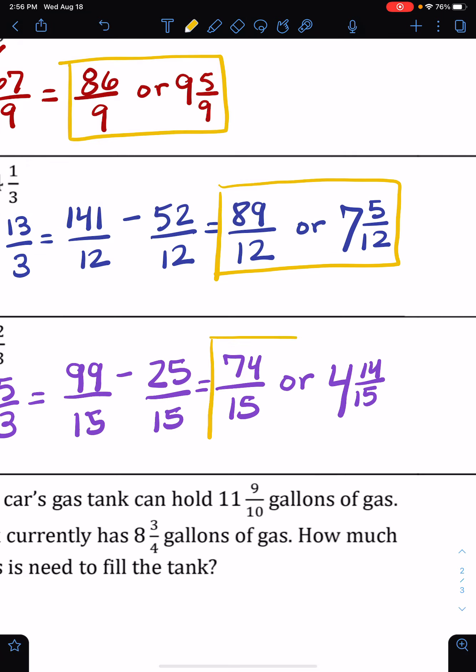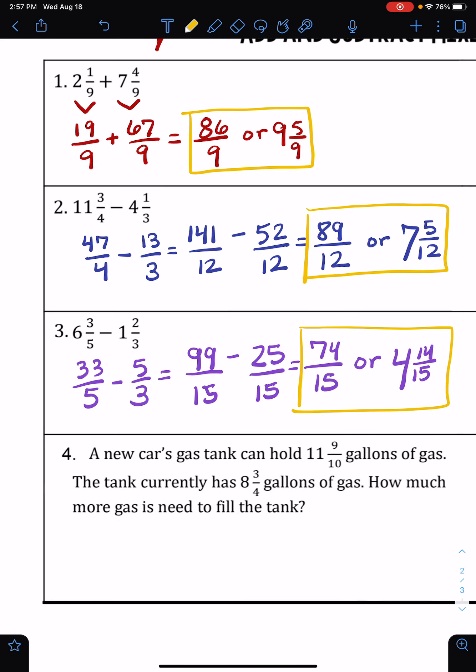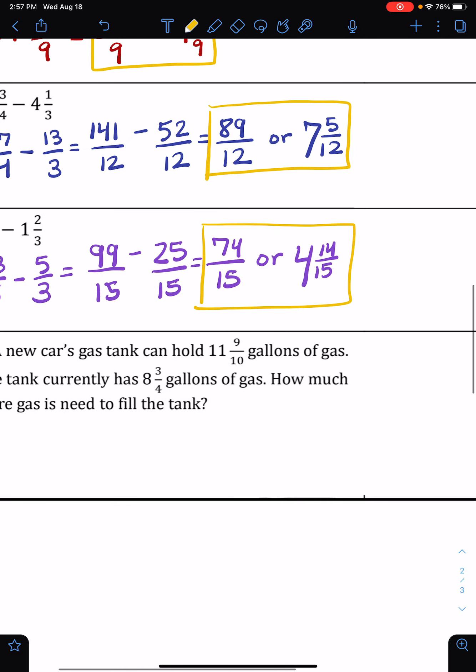And then finally, let's do this word problem together. A new car's tank can hold 11 and 9 tenths gallons of gas. The tank currently has 8 and 3 fourths gallons of gas. How much more gas is needed to fill the tank? So let's subtract these two.